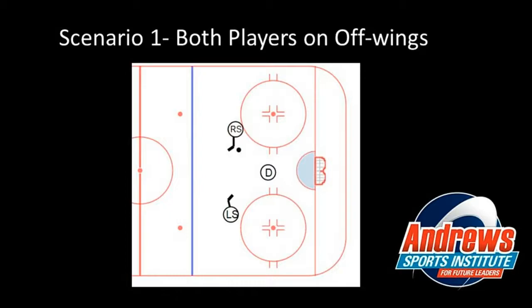The first and most dangerous scenario is two players with their sticks on the inside — what we call off-wings, meaning your stick is toward the inside of the ice. If you draw a line from the puck to the middle of the net, that's a good angle with a lot of shot opportunities. Compare that to a left-shot with the puck on the outside — a big difference in angle and scoring opportunity. The right shot with the puck on the inside must be respected by the goalie. And there's also the dangerous one-timer option across the Royal Road — if that puck gets across the defenseman, it's a very dangerous play.